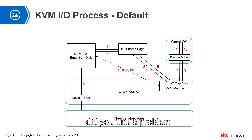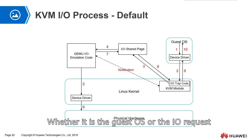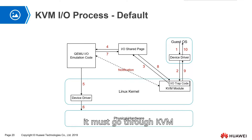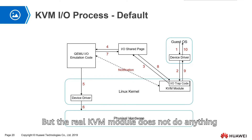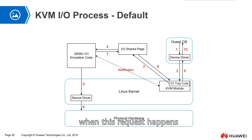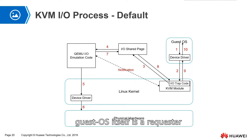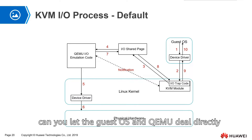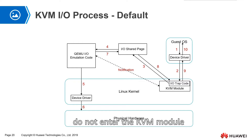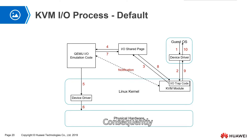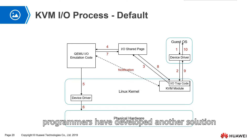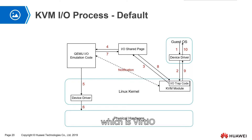During the whole process, do you find a problem? Whether it is the guest OS sending an IO request, or the result returned by QEMU, it must go through KVM. But the real KVM module does not do anything when this request happens. Is there any way for the guest OS, as the requester, and QEMU, as the processor, to deal directly without entering the KVM module? This would speed up the process and improve performance. Consequently, programmers have developed another solution for this problem.